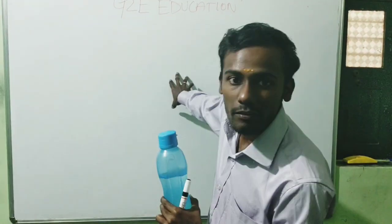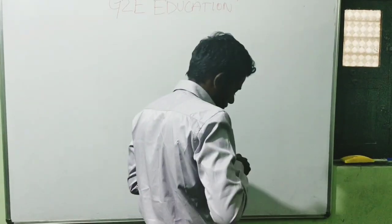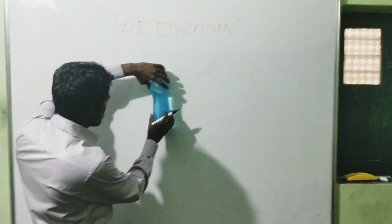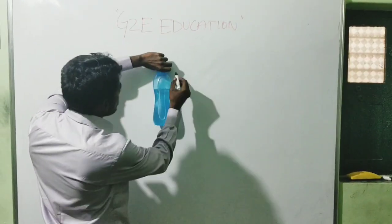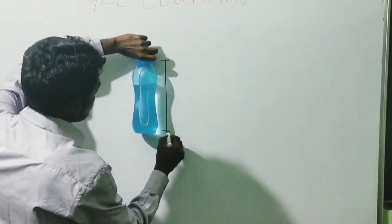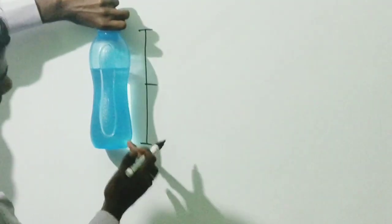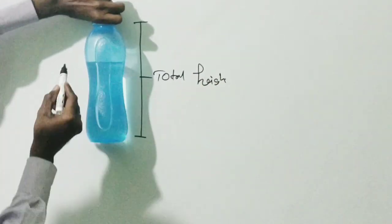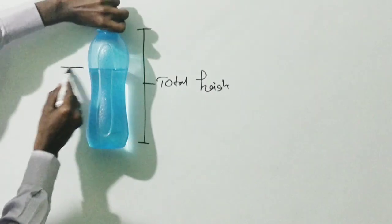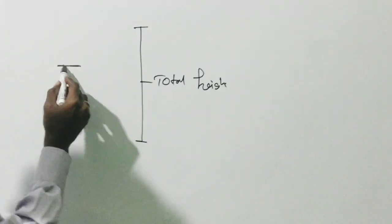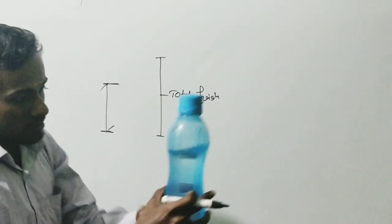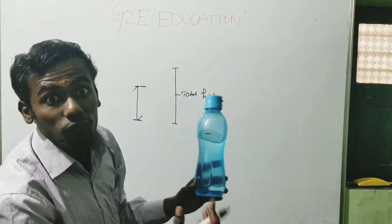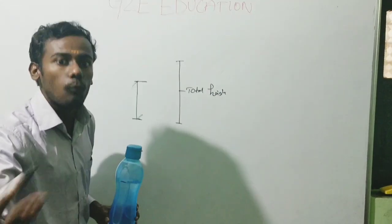Let's draw this water bottle on the board. Place the water bottle. So this end to this end is the total height. This point to this point is the level of water — what is called the level of water.